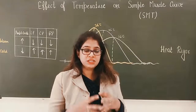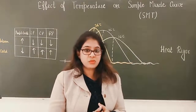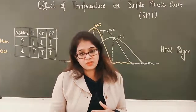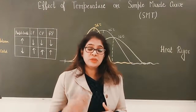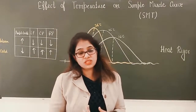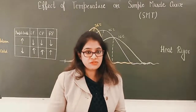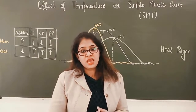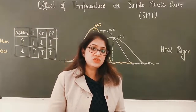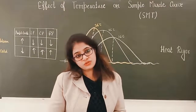The muscles become rigid, and this rigidity is called rigor mortis. This rigidity is dissolved after some time, probably due to release of lysosomal enzymes which cause autolysis. So the rigidity is lost after a few hours, and this is how rigor mortis is resolved.